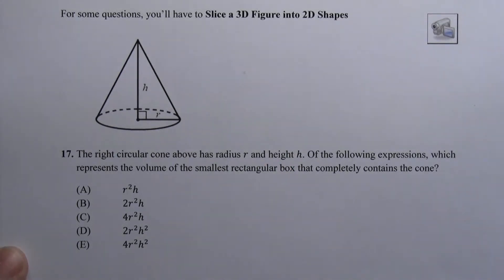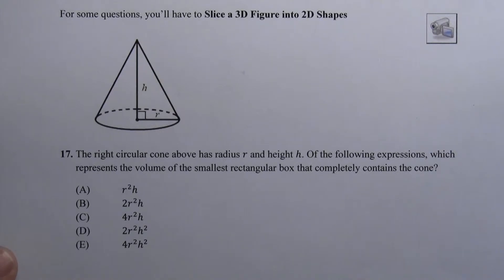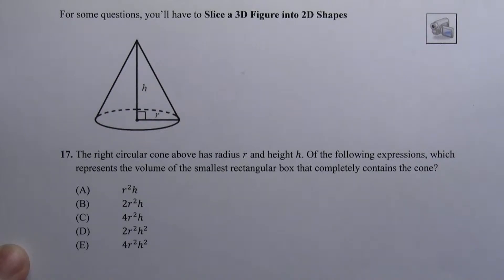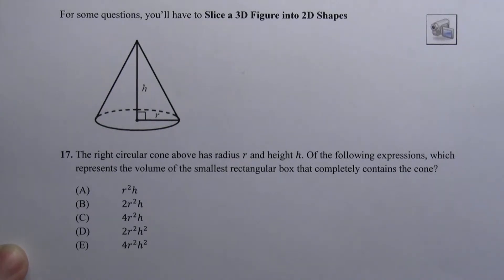So let's take a look at number 17. It says the right circular cone above has a radius r and height h. Of the following expressions, which represents the volume of the smallest rectangular box that completely contains the cone? So we need to draw a box around this cone.